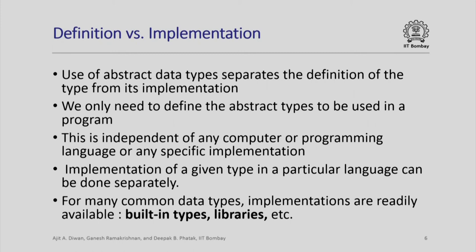In a programming problem, we just first need to define what abstract data types we want to work with and what operations we need. The actual implementation of these types can be done separately, and for many common data types, we already have either built-in types or libraries available which give us implementations of those types. If you know exactly what abstract types you need, many times you will find implementations already available, either as built-in types or in libraries, and you can directly use those without worrying about how they are implemented.